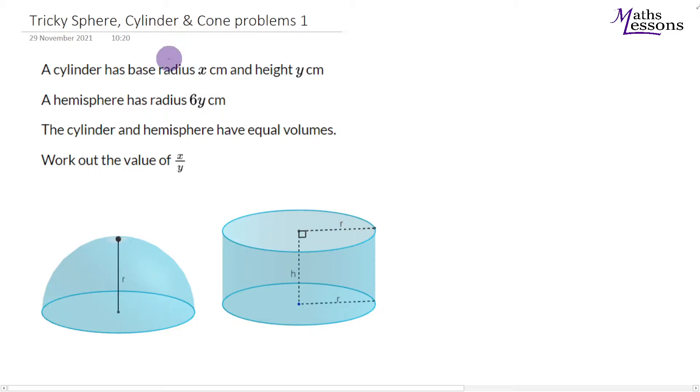Okay, so we have a tricky sphere and cylinder problem here. We know a cylinder has base radius x, so we're going to change this r here to x, and height y, so let's change the height to y. And the hemisphere has radius 6y, so the radius which is here is 6y. The cylinder and hemisphere have equal volumes, so these two volumes are equal, and we want to work out the value of x over y.